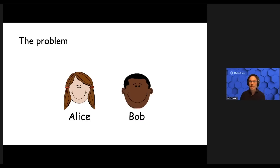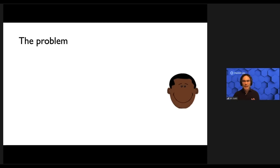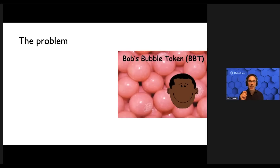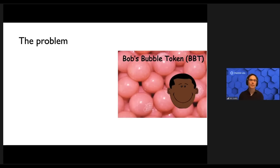To explain what Deco is, let me first give you a motivating example involving cryptographers' two favorite people, Alice and Bob. Now, Bob is about to launch a new token called Bob's Bubble Token, and he's going to be holding a token sale. Bob has particular ideas about how to make his token sale responsible. He wants to ensure that his tokens are fairly distributed — they're not all snapped up by a whale — and that people who participate can reasonably afford to do so.